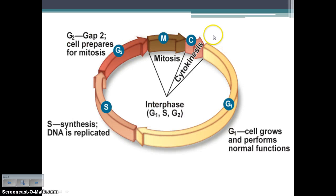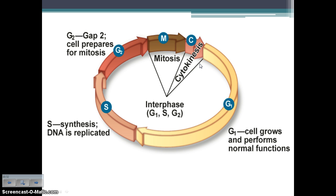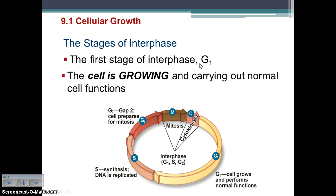Let's start with interphase. Looking at the diagram, all of G1, S, and G2 is interphase — mitosis and cytokinesis just make up a small portion. A lot of time is spent in interphase compared to mitosis and cytokinesis. The first stage of interphase is the G1 phase, where the cell is growing and carrying out normal cell functions — maintaining homeostasis, doing its normal thing, getting larger.